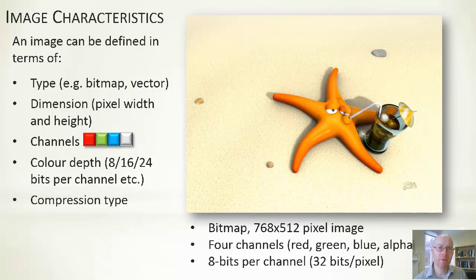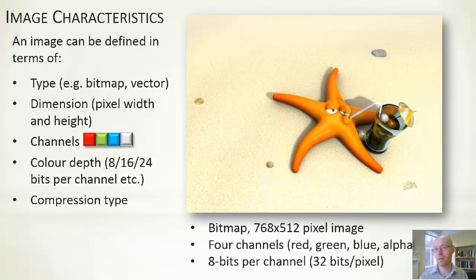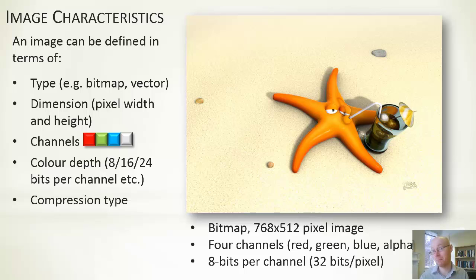Compression type: if you do the maths on image size, the uncompressed size is actually quite large. Depending on the device, when images are loaded into memory and used within a game they are stored in an uncompressed — or at best not highly compressed — format. So it's always useful to bear in mind that even though it may be a 100K file on disk, when uncompressed in memory it could be up to a megabyte of memory.